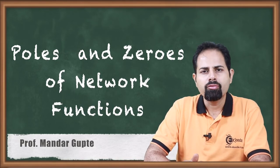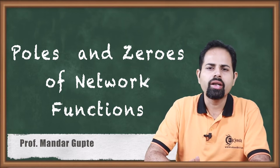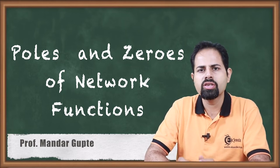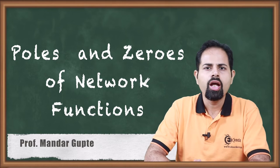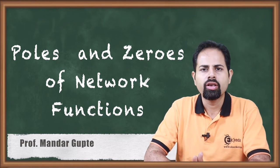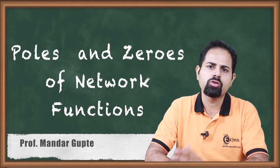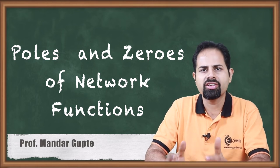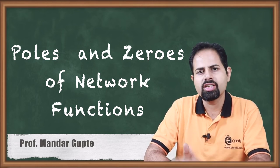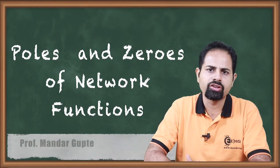Today we will see one of the most important parts in a network function, which is called poles and zeros of network function. Because without poles and zeros, a function is not a good function or it is very difficult to solve mathematically. It is not an interesting function. So let us see what is poles and zeros of a network function.